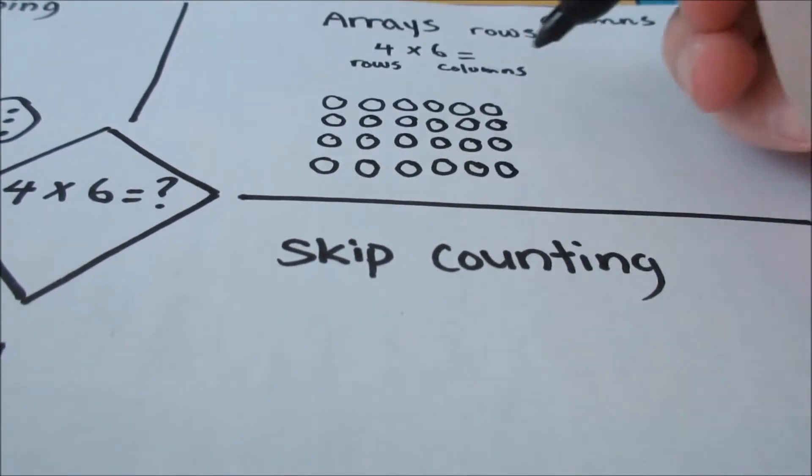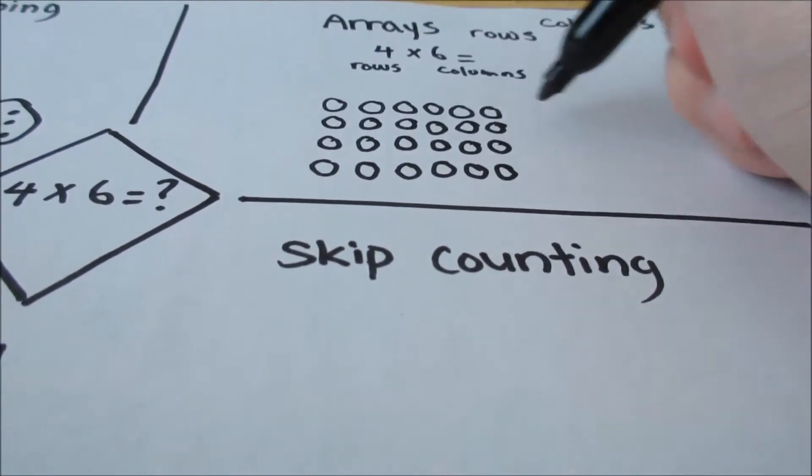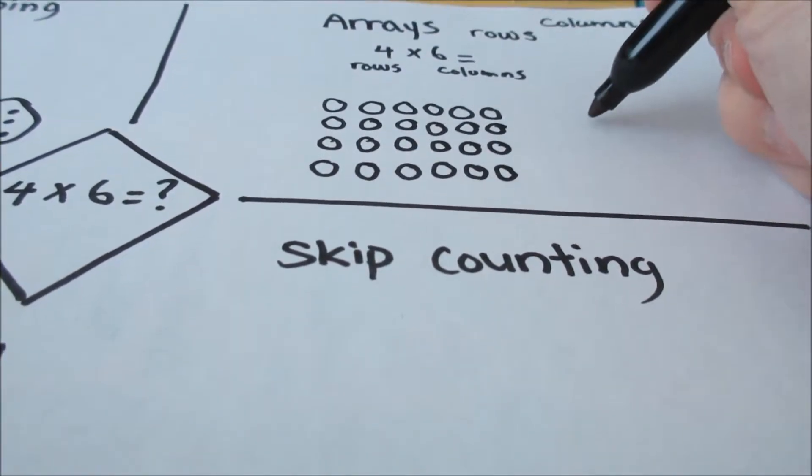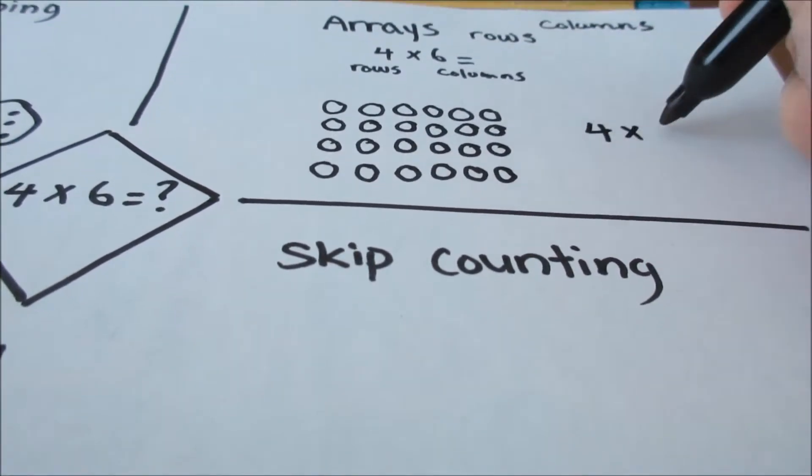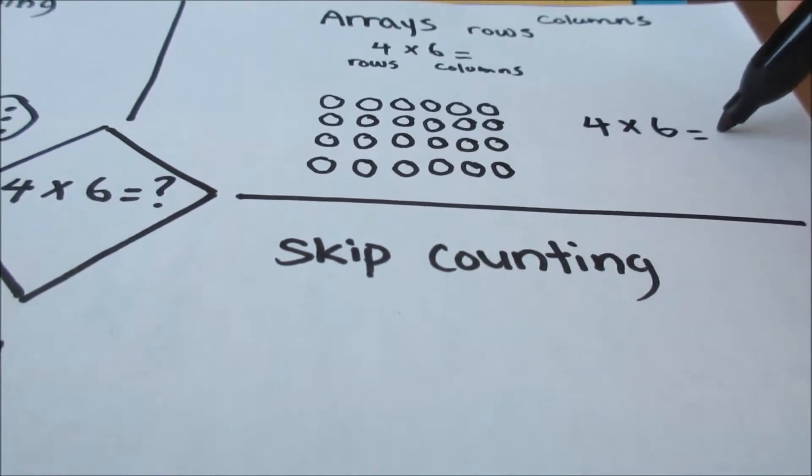Now if you count everything all together, you are going to get 24. So 4 times 6 is equal to 24.